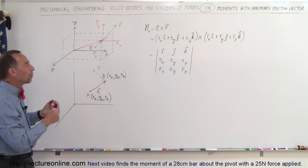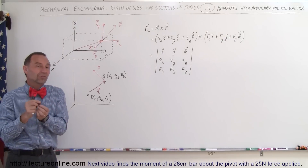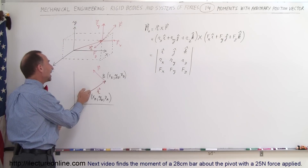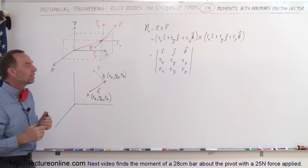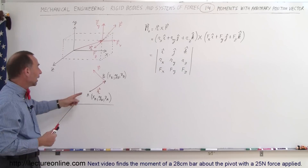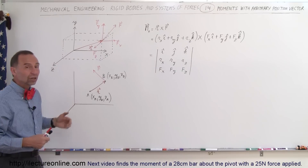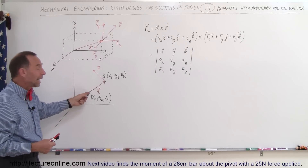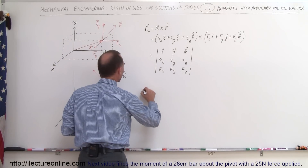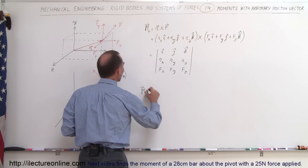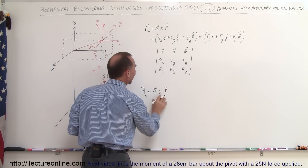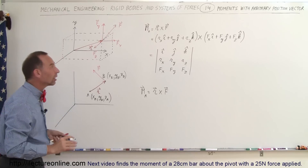But what do we do when we have an arbitrary position vector — meaning the position vector doesn't start at the origin, but starts at some arbitrary point A and the force acts at some arbitrary point B in space? How do we then calculate the moment? In this case it will not be the moment about the origin; it will be the moment about point A, assuming that that's the point of rotation. Therefore, the moment with respect to A will be equal to the position vector multiplied by the force vector using the vector product methodology.